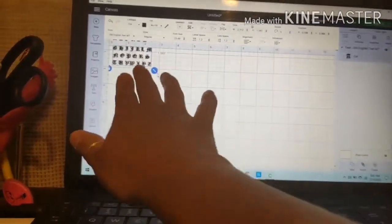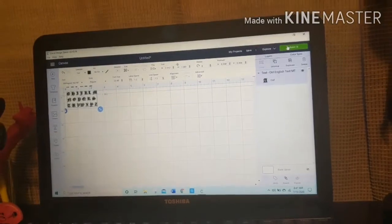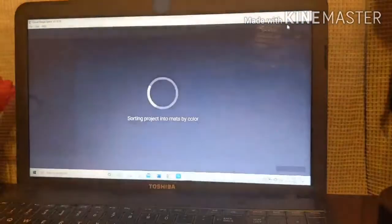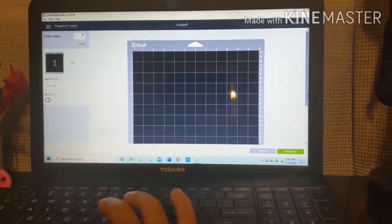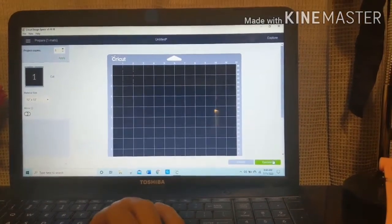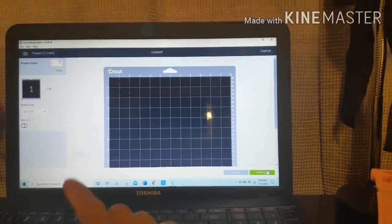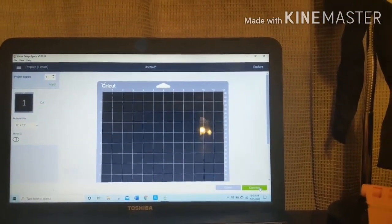So I ended up spacing them out a little bit better. And so this is what it looks like. We're going to go ahead and click make. Again, this is like my second time using it. The first time I tried using my machine was yesterday and I made a shirt for my daughter. It was an Ariel one. Go ahead and click continue.